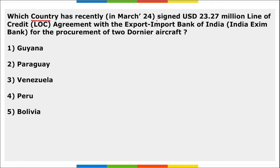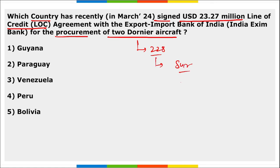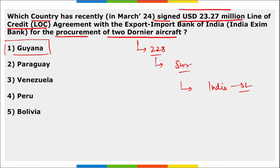Ghana recently signed a $23.27 million line of credit agreement with Exim Bank of India for the procurement of two Dornier 228 surveillance aircraft — the same type India had gifted to Sri Lanka.